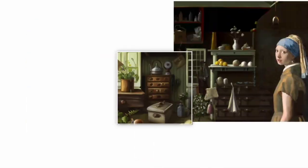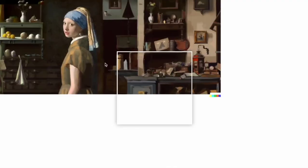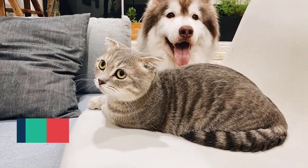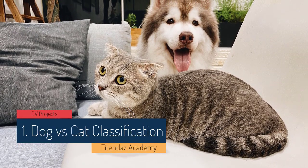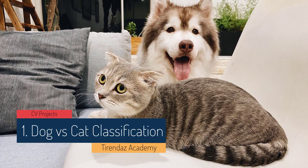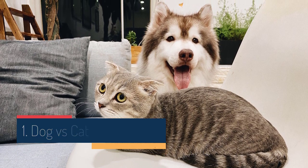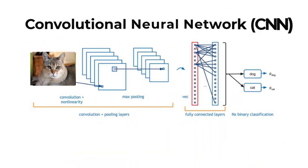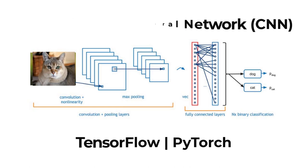We briefly discussed what computer vision is. Let's go ahead and take a look at computer vision projects. The first project I'm going to mention is dog and cat classification. This is one of the simplest computer vision projects you can perform. The goal is to learn image classification using computer vision. For this project, you can build a simple CNN model from scratch using TensorFlow or PyTorch. This project teaches you how to build convolutional neural network models.